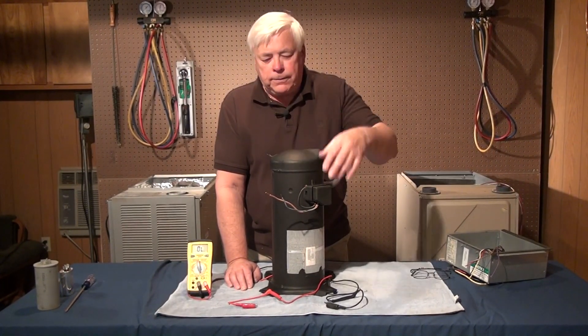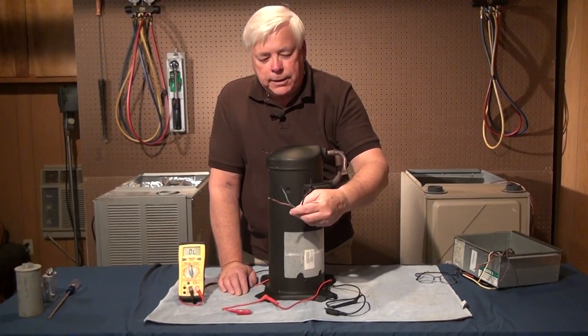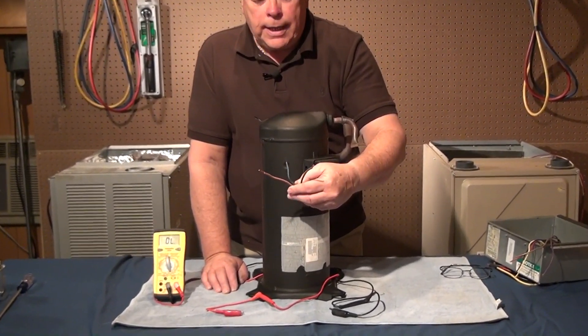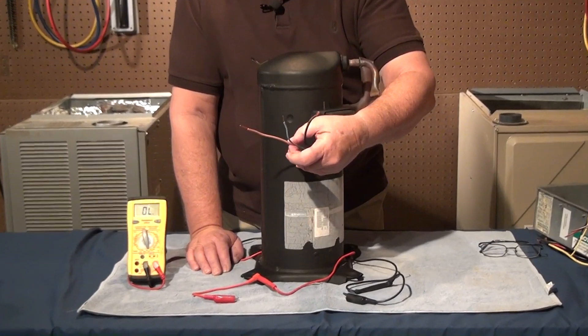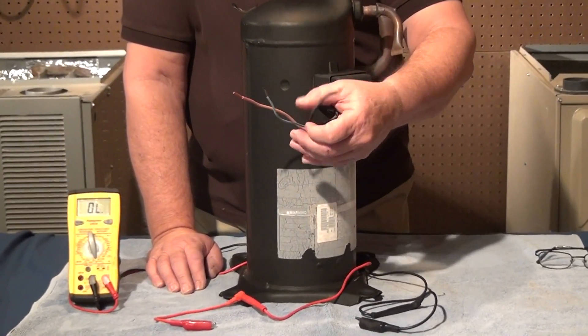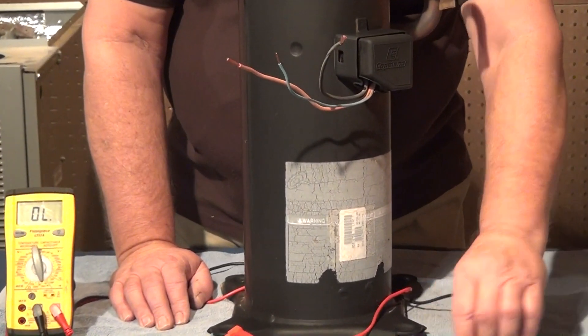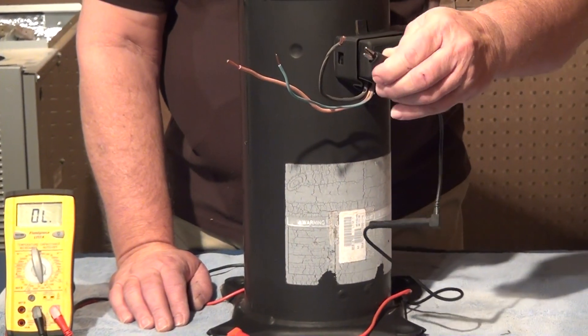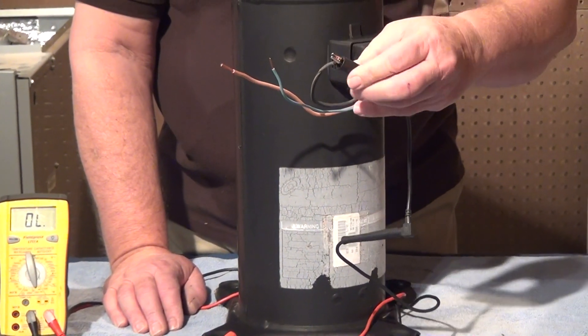So in order to completely troubleshoot this problem situation, we need to make sure that we do a test of this compressor from an electrical perspective, and what we've done is we've isolated the compressor here and we have the three wires that lead to the common, the run, and the start windings of the compressor. What we're going to do is do an electrical check to find out exactly what may be going on with this particular compressor.